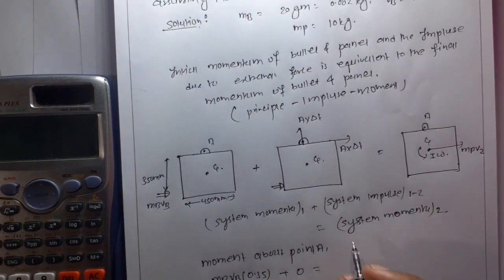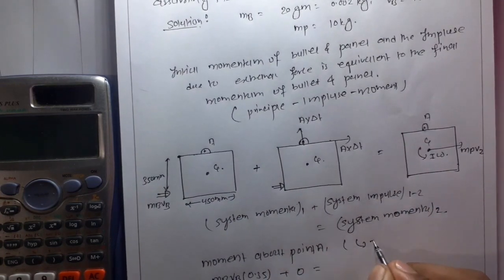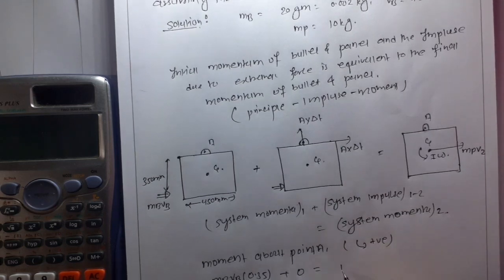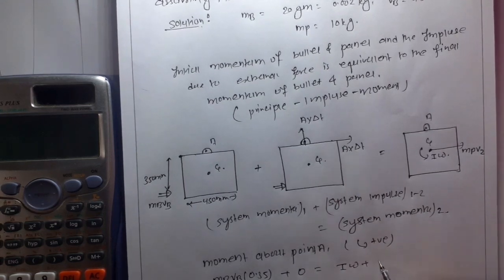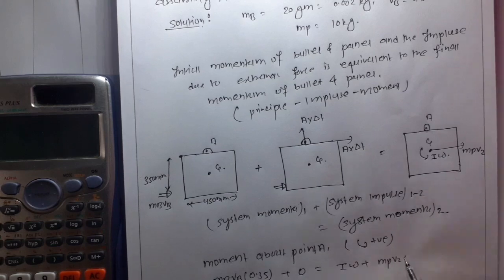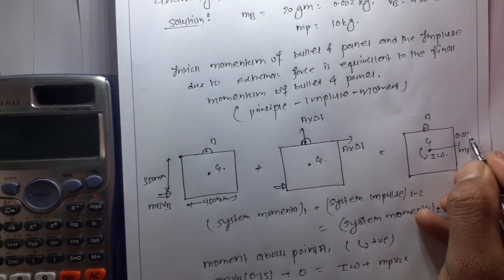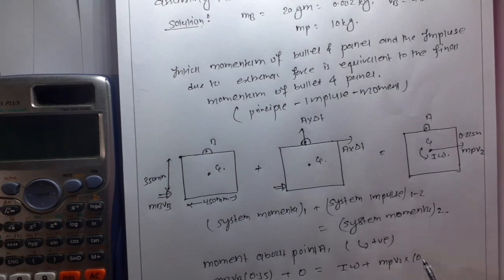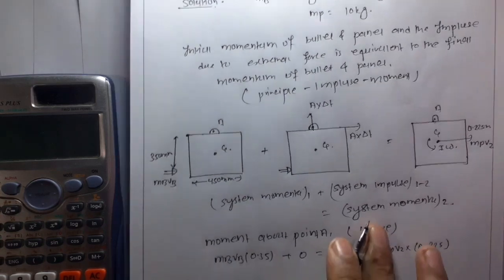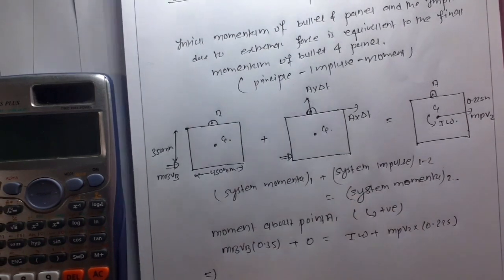Taking moments about point A: first case, mb times vb and the distance is 0.35 meters, plus the initial moment is zero, which equals I times omega plus mp times the distance of 0.225 meters.